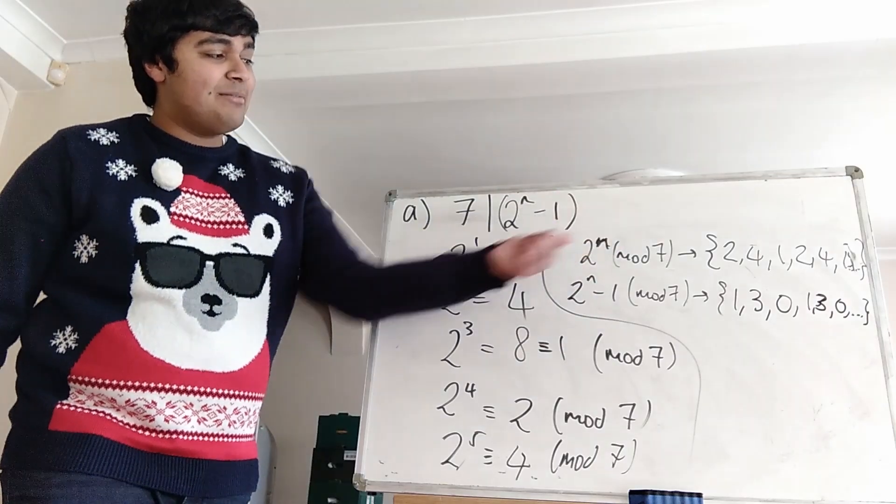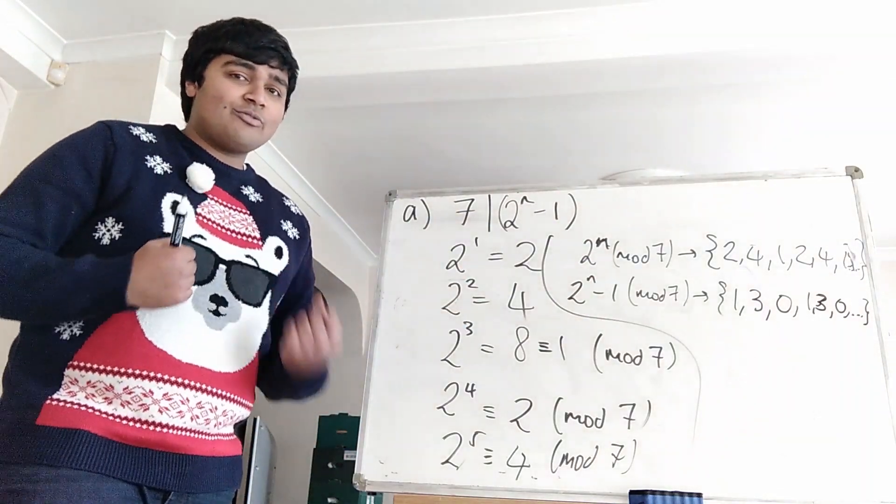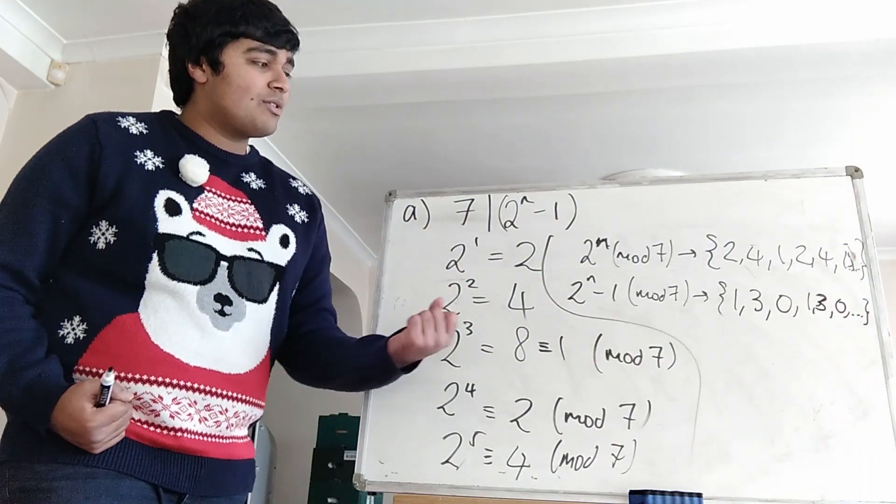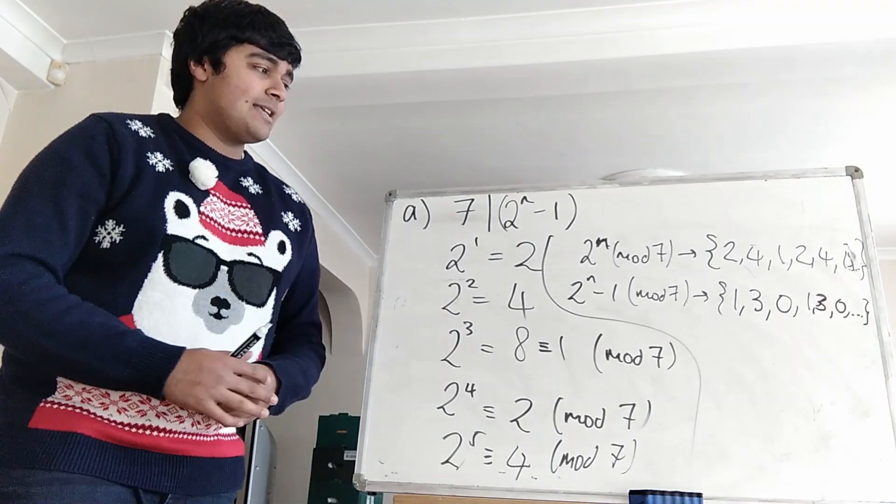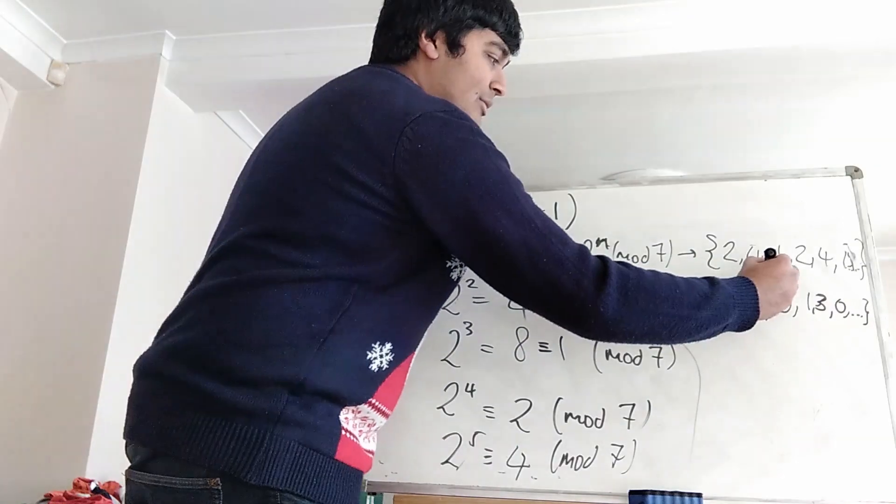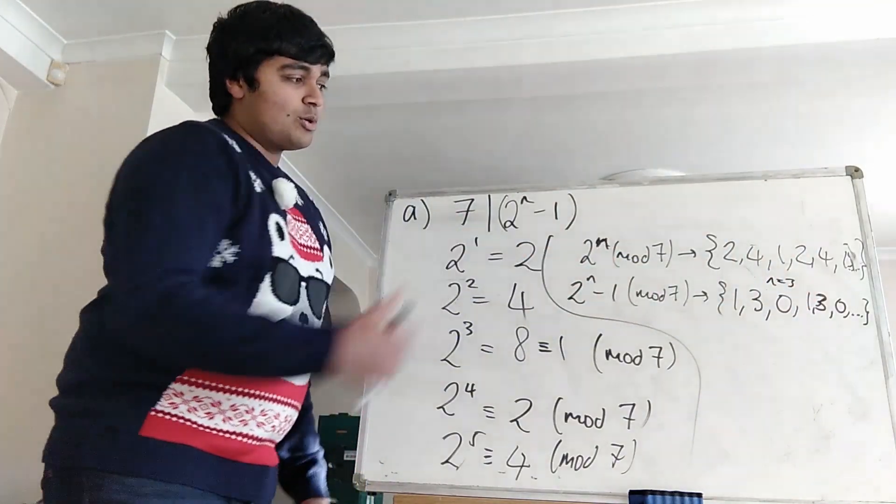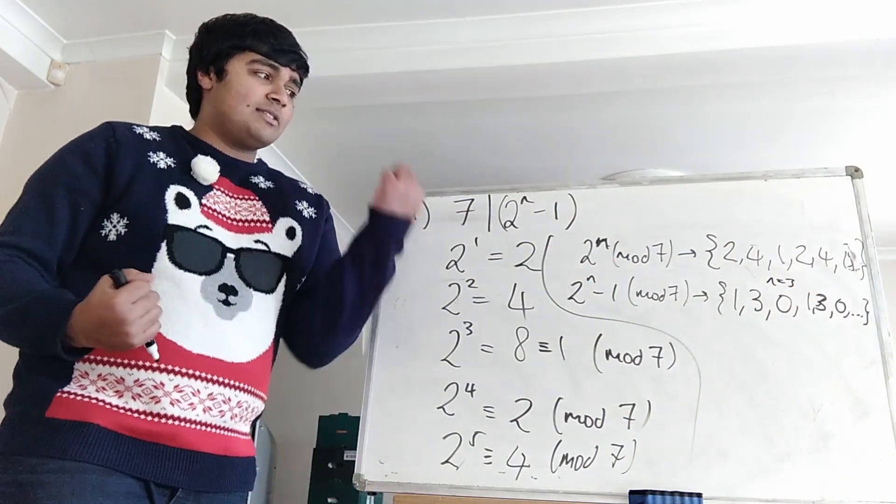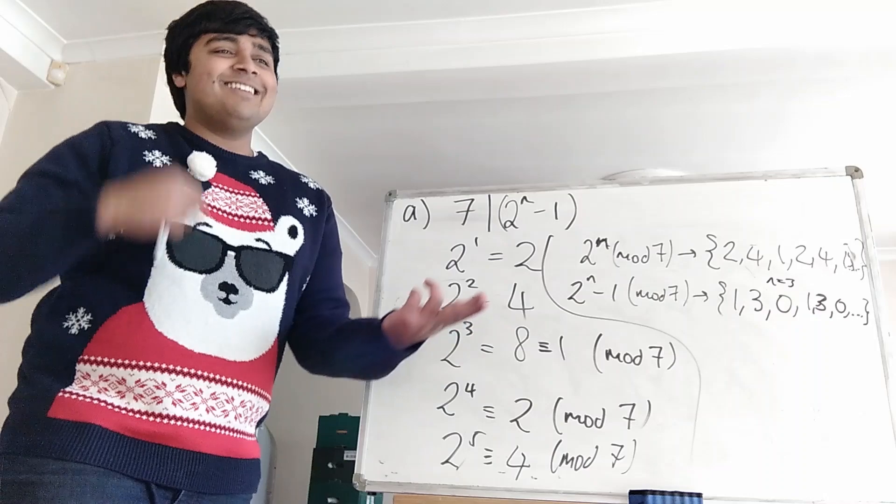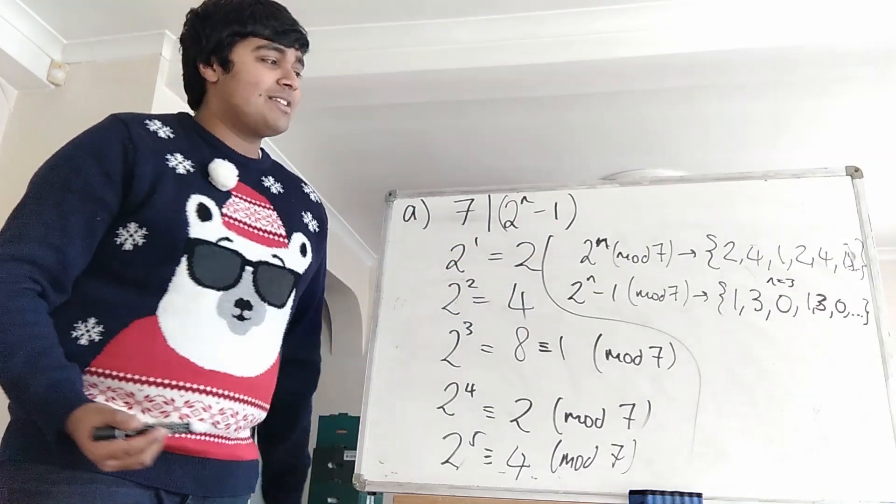And we see that every third element is a 0 and that corresponds to being divisible by 7 because if something is 0 mod 7 that means it's divisible by 7. So this is the case n equals 3 when we have 2 cubed minus 1 which is 8 minus 1 which is 7 and obviously 7 is a multiple of 7.